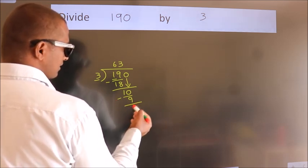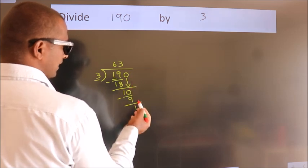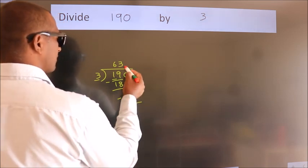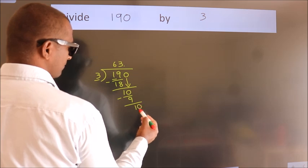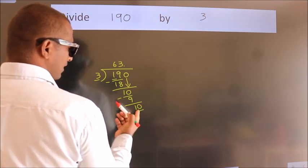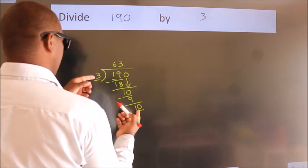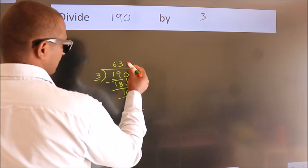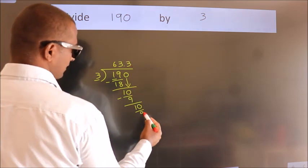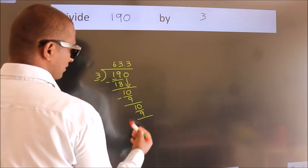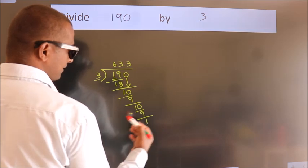After this, no more numbers to bring it down. So what we do is, we put a dot and take 0. So, 10. A number close to 10 in the 3 table is 3 times 3, which is 9. Now we subtract. We get 1.